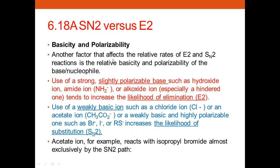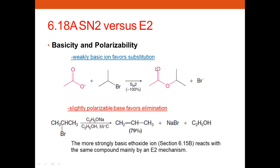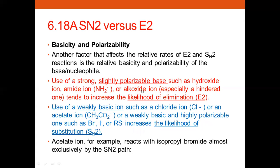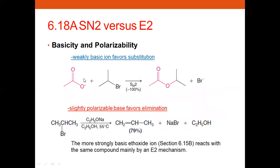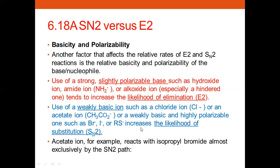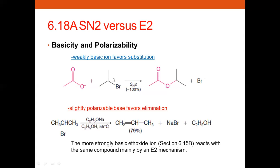When comparing SN2 and E2: if you are using a weak base and slightly polarizable one — like acetate with a double-bond oxygen — or if you are using larger, very highly polarizable anions such as RS⁻, R⁻, these are very highly polarizable and they favor the SN2 substitution reaction, doing a concerted mechanism.